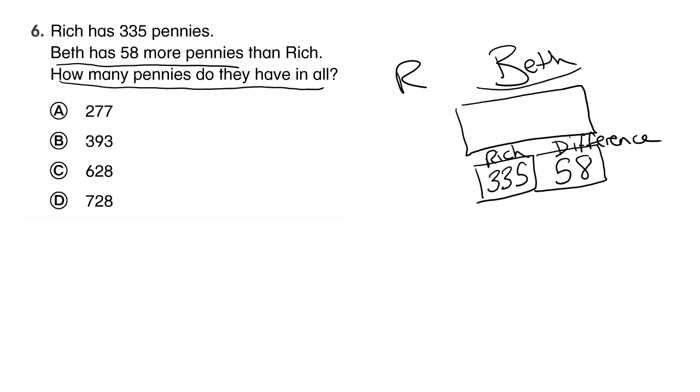So we have to find out how many pennies Beth has first. To do that we have 335 plus 58. Again, I'm going to use partial sums because that's what I like. 300, 30 plus 50 is 80, 5 plus 8 is 13.